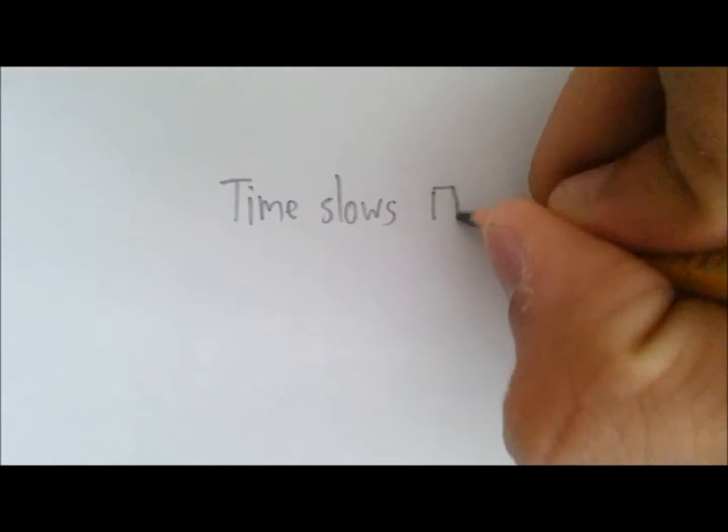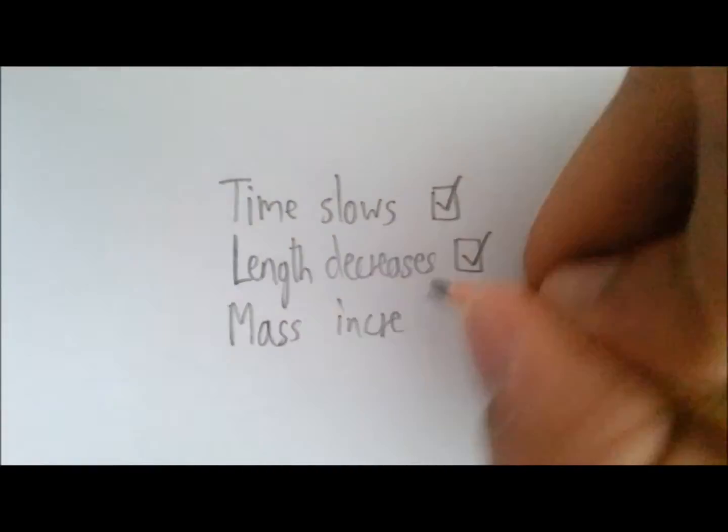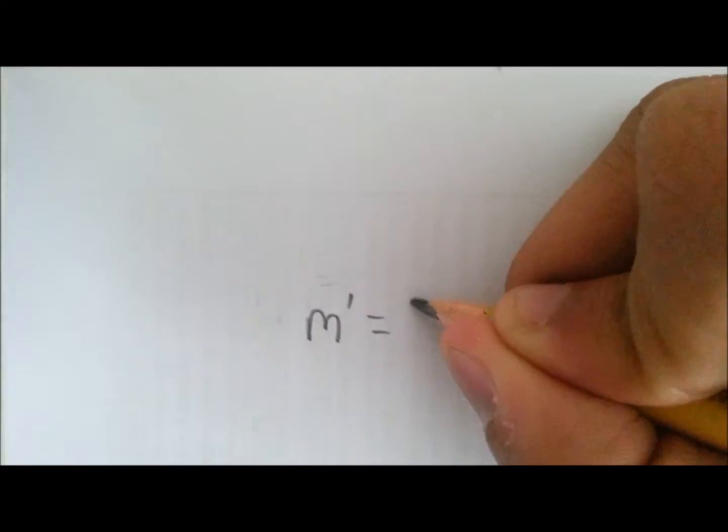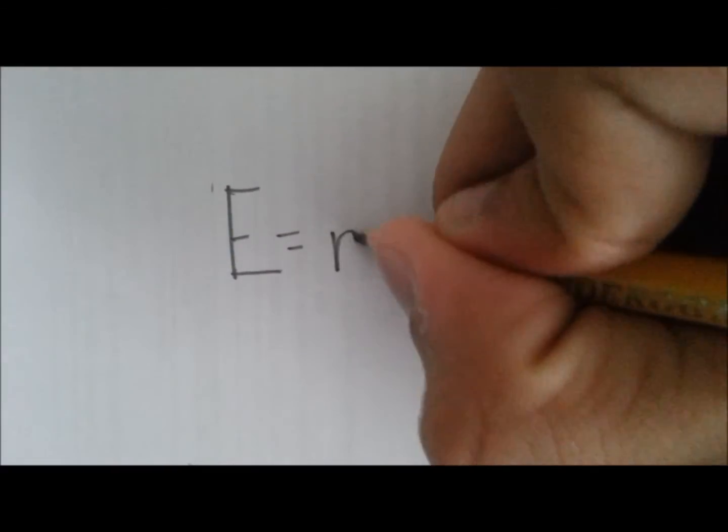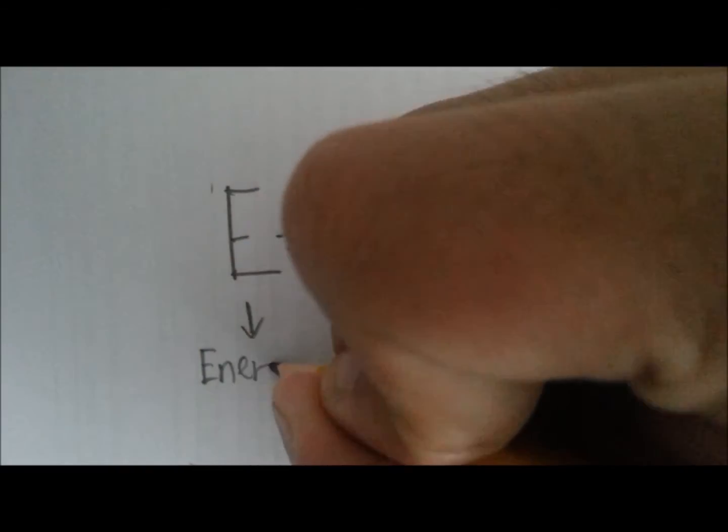Interestingly enough, length isn't the only aspect of an object that changes. When an object is moving, its mass increases, again, by the Lorentz factor. This comes from the energy of motion turning into mass, which can be calculated by the formula E equals mc squared.